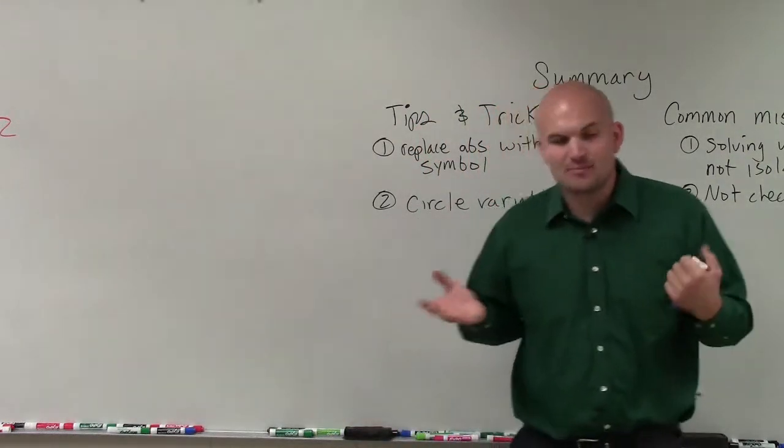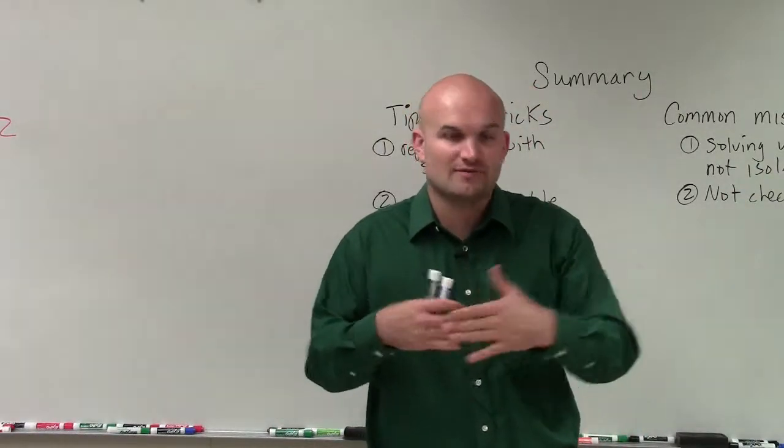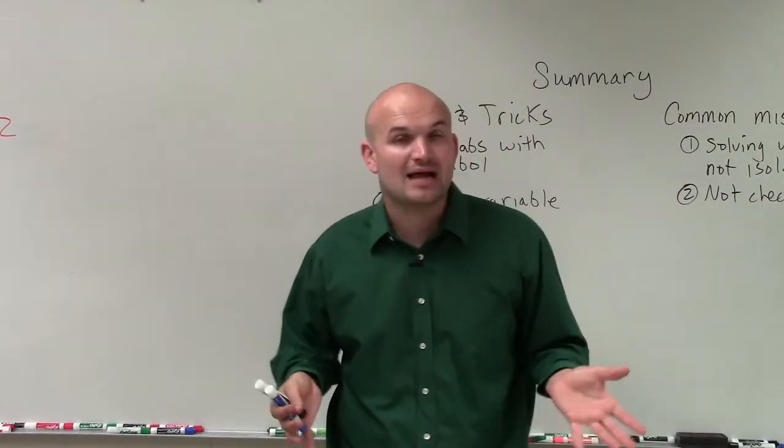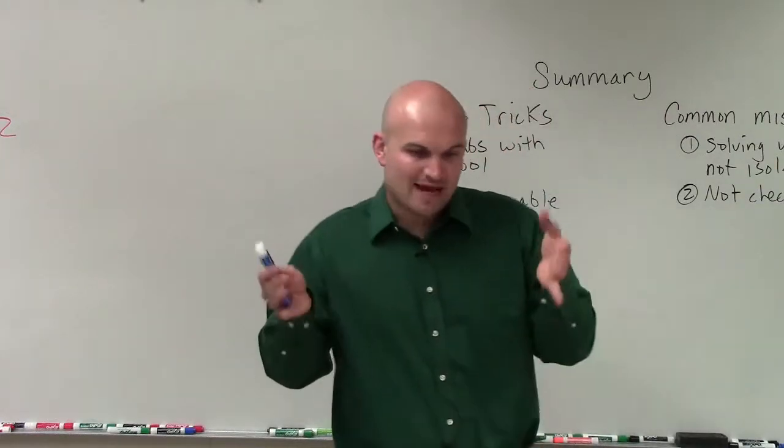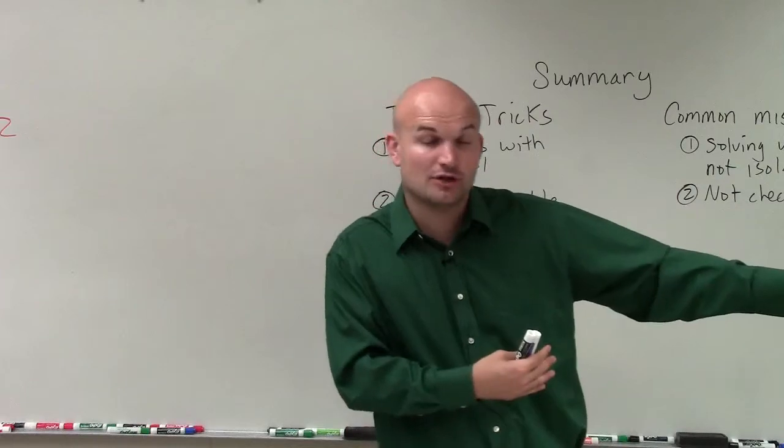So basically the process for solving an absolute value equation is to first of all isolate the absolute value symbol. Make sure you get rid of any operation that's being applied to that symbol. Then, once we have the symbol, our expression inside that symbol equal to another expression, we go ahead and set up our two cases.